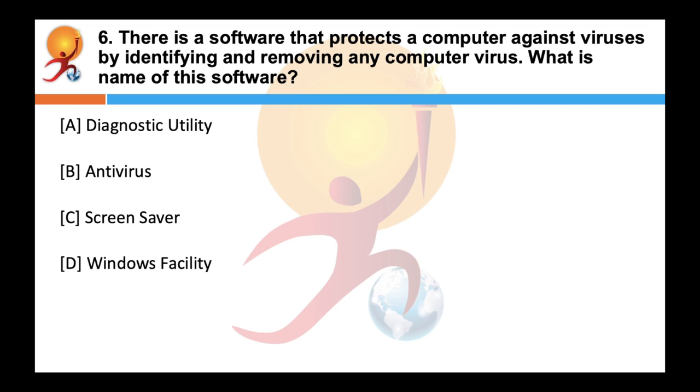There is a software that protects a computer against viruses by identifying and removing any computer virus. What is the name of this software? Correct answer is an antivirus. An antivirus is a computer program which is used to prevent, detect and remove malware. If properly installed on a computer system, it can prevent access to computer systems by other unwanted computer malwares.